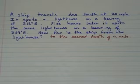A ship travels due south at 20 miles per hour. It spots a lighthouse on a bearing of south 12 degrees east. Five hours later, it spots the same lighthouse on a bearing of south 64 degrees east. How far is the ship from the lighthouse to the nearest tenth of a mile?